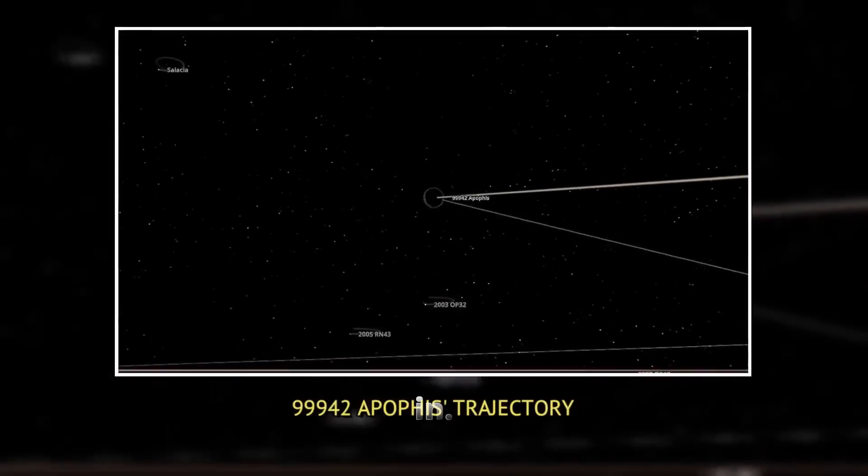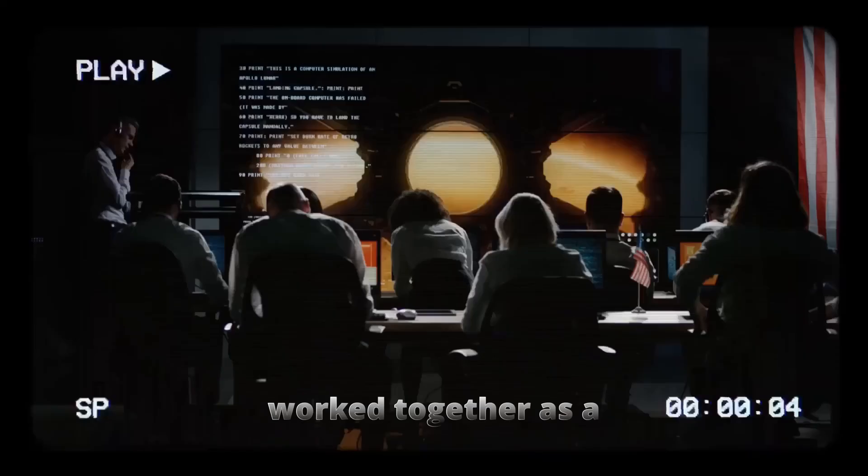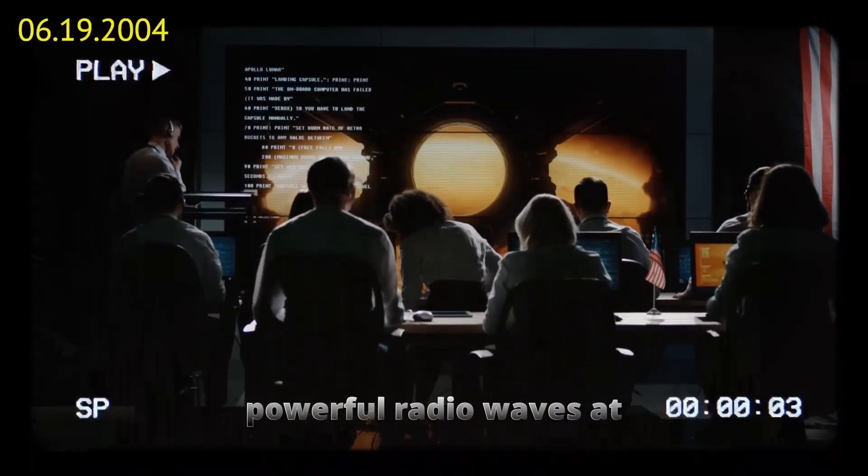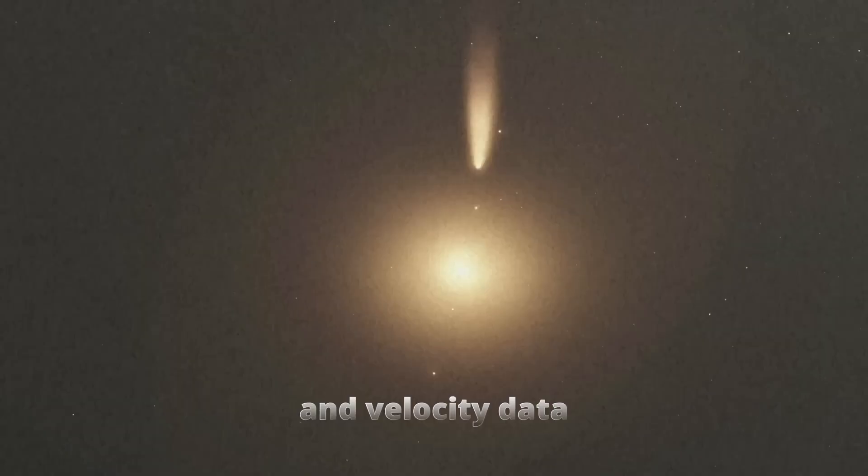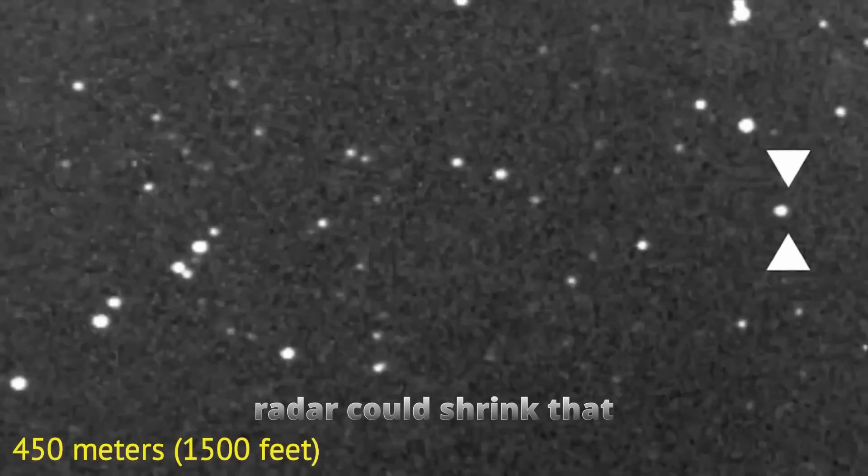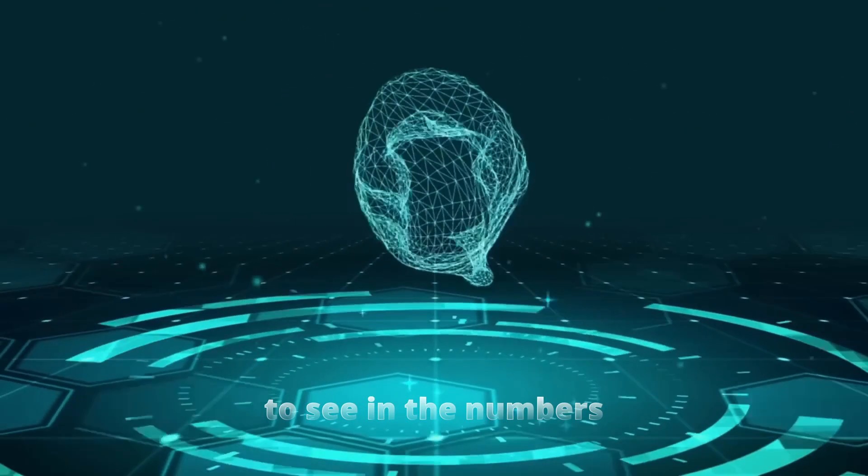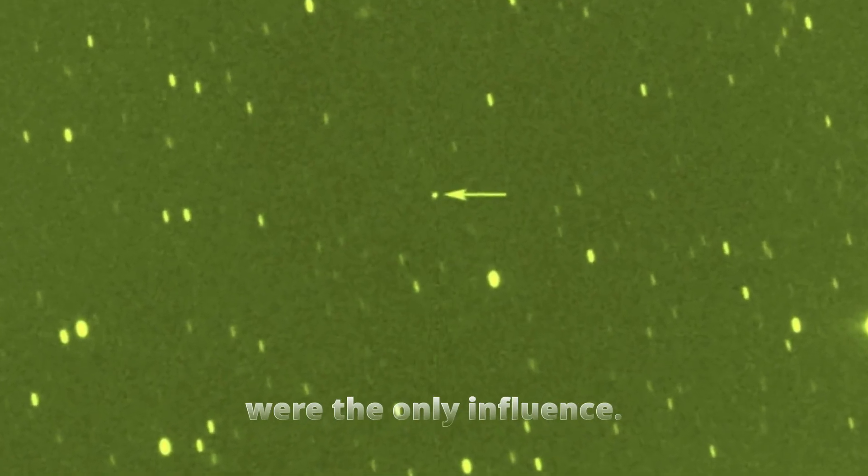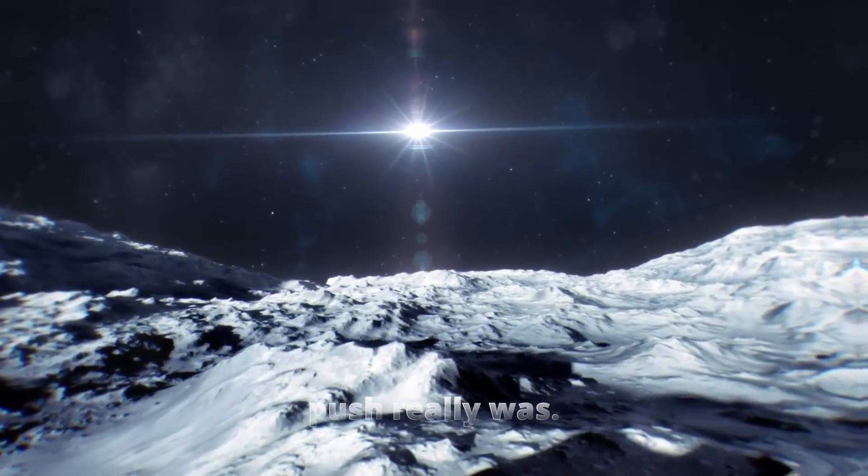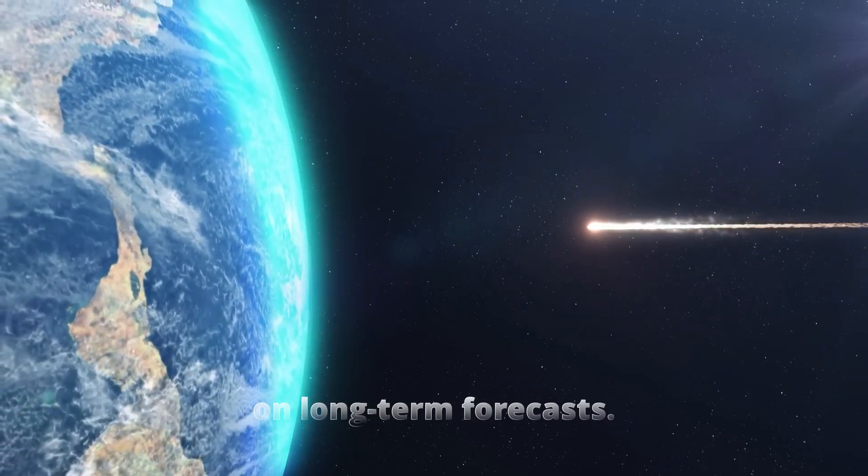This is where high-precision radar came in. Facilities like the Goldstone Deep Space Communications Complex in California and the Green Bank Telescope in West Virginia worked together as a radar imaging team. They aimed powerful radio waves at Apophis during its closer approaches, and then listened for the echoes bouncing back from its surface. These echoes gave the most accurate position and velocity data possible from Earth. While telescopes tracking it visually could place it within hundreds of meters, radar could shrink that uncertainty to within a handful of meters. With radar data, scientists could finally start to see, in the numbers, the fingerprint of the Yarkovsky effect.